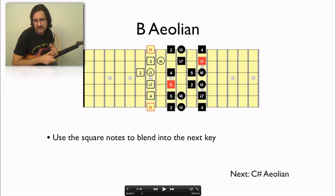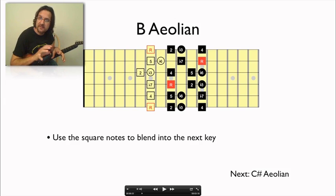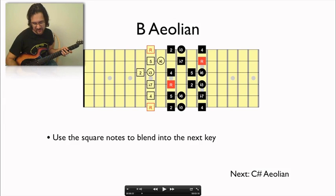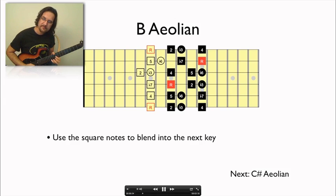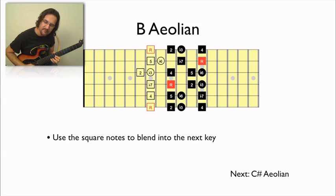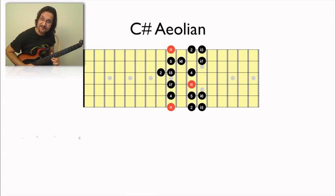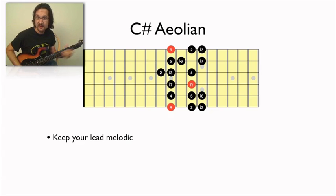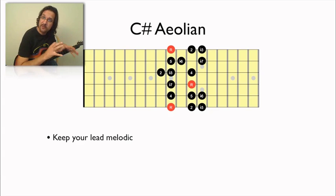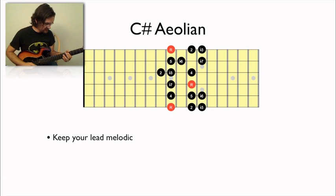As I improvise, I'm going to try to land on the 2nd string, 12th fret. So I'm going to try to target that note and stay on it while the backing track changes keys. That's the note I want. It worked fine, and we're now in C# Aeolian — that created a smooth transition. Let's continue improvising in C# Aeolian.